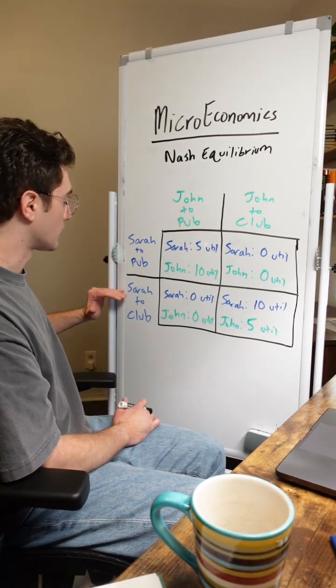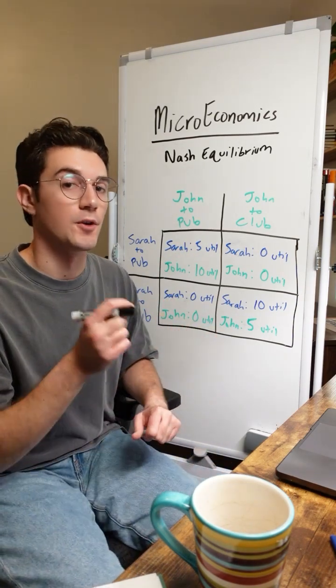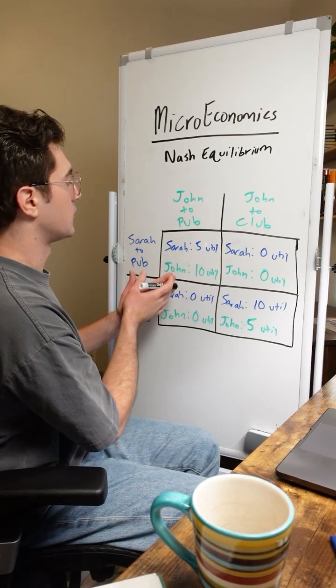If Sarah changes her strategy and goes to the club, she's going to go from 5 to 0 utility. It doesn't make sense for her to ditch John, so Sarah's staying in this cell. Let's see if John is too.